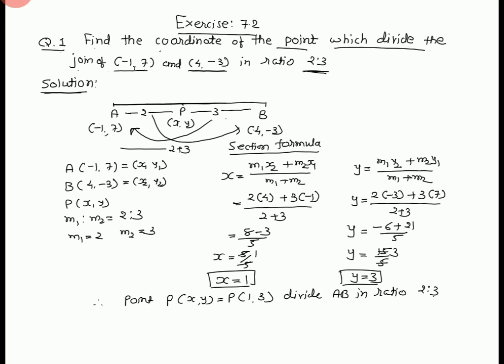Now we start the solution. We draw the line joining the two points A and B. Here point A is (-1, 7) and point B is (4, -3).